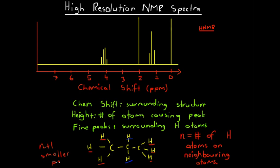What do we mean by the number of hydrogen atoms on neighbouring atoms? Here we've got this carbon with three hydrogens. Both of the central hydrogens are bonded to one carbon. We look at the number of hydrogen atoms on neighbouring carbons. Here we've got six hydrogen atoms on the neighbouring atoms of these two hydrogens — three on one neighbouring carbon and three on the other. So these two hydrogens in the middle will be split into N plus one, or seven smaller peaks.